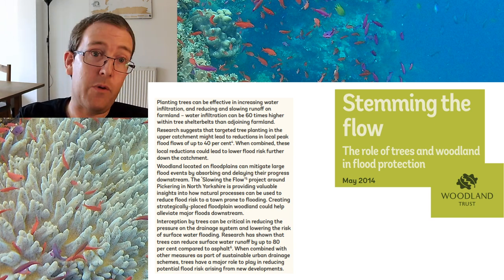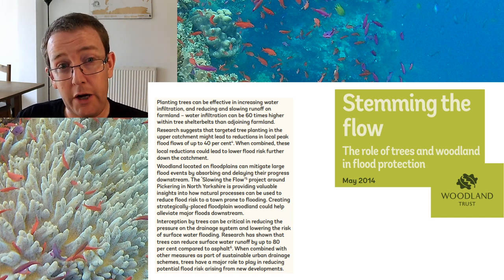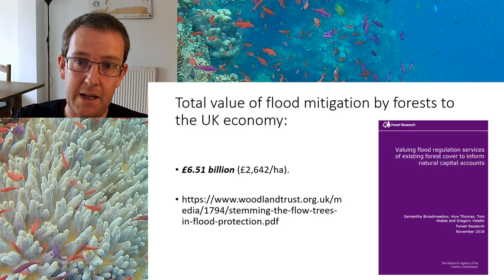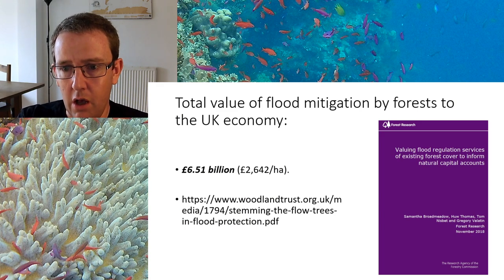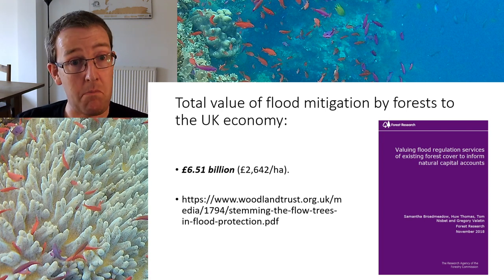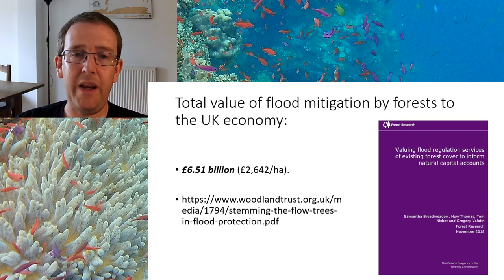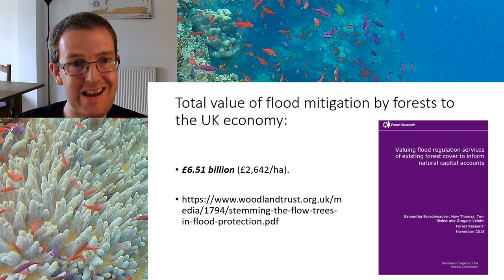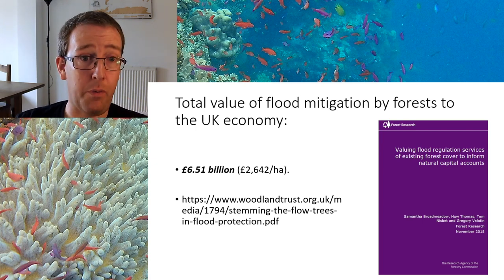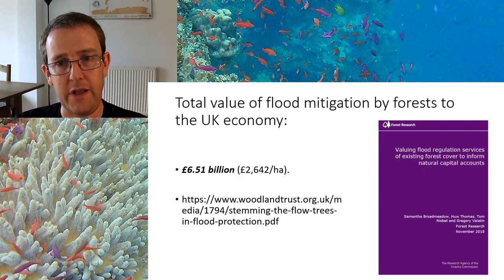Given that every winter we seem to have more and more floods, more people losing homes and businesses, I did some research and found a 2018 paper from the Forestry Commission, also published by the Woodland Trust. They came to a number — with huge caveats, because it's really hard to measure — that the total value of flood mitigation by forests to the UK economy annually is £6.51 billion pounds just from having forests to stop our homes and properties flooding. It will vary depending on rainfall, but it's big money — really big money.